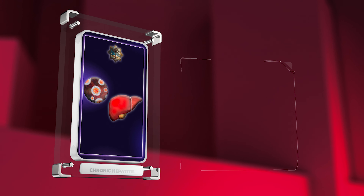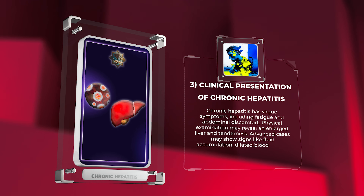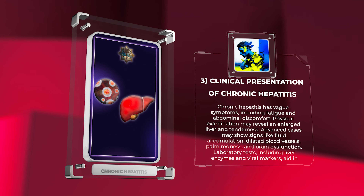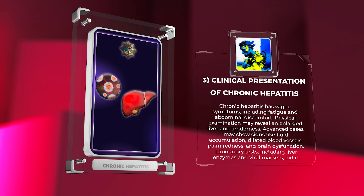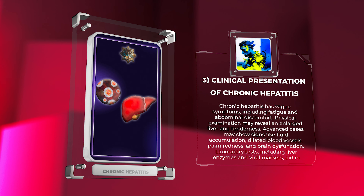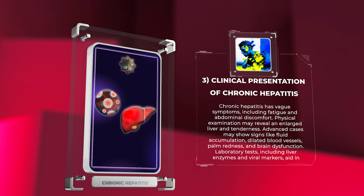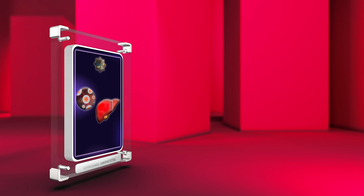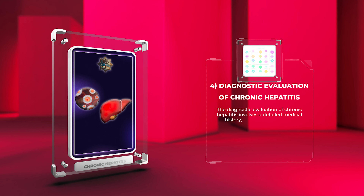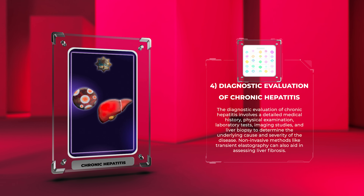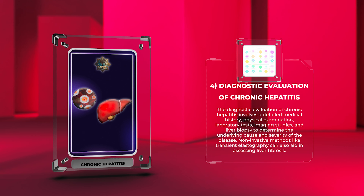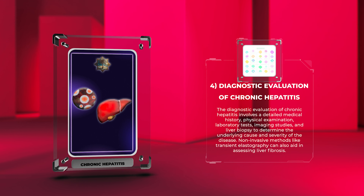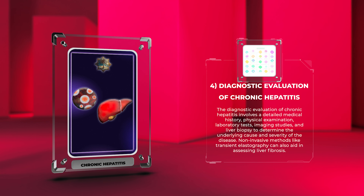Chronic hepatitis has vague symptoms, including fatigue and abdominal discomfort. Physical examination may reveal an enlarged liver and tenderness. Advanced cases may show signs like fluid accumulation, dilated blood vessels, palm redness, and brain dysfunction. Laboratory tests including liver enzymes and viral markers aid in diagnosis. The diagnostic evaluation involves a detailed medical history, physical examination, laboratory tests, imaging studies, and liver biopsy to determine the underlying cause and severity. Non-invasive methods like transient elastography can also aid in assessing liver fibrosis.